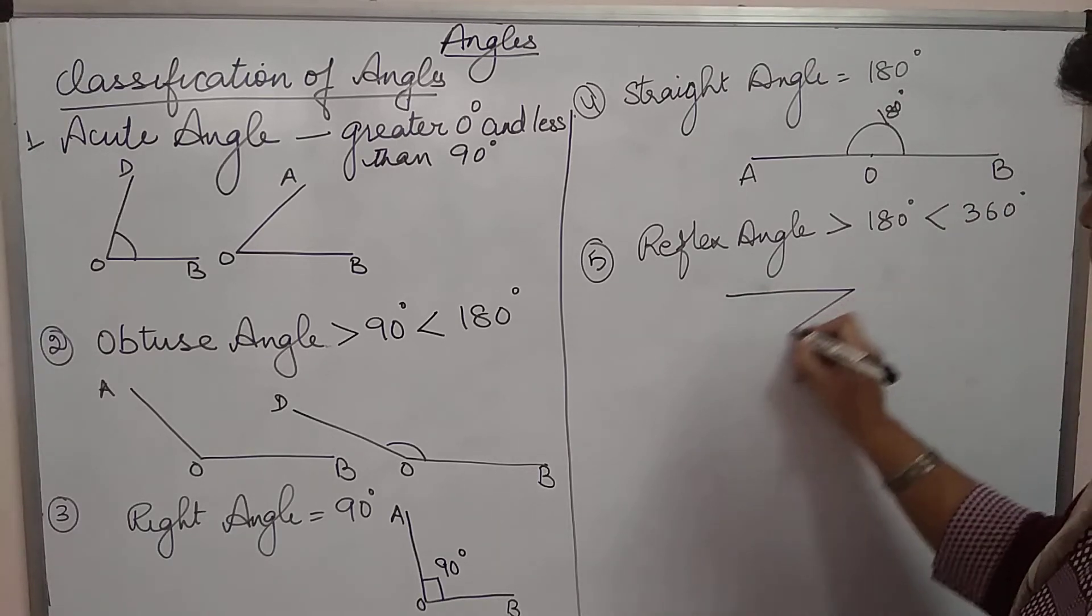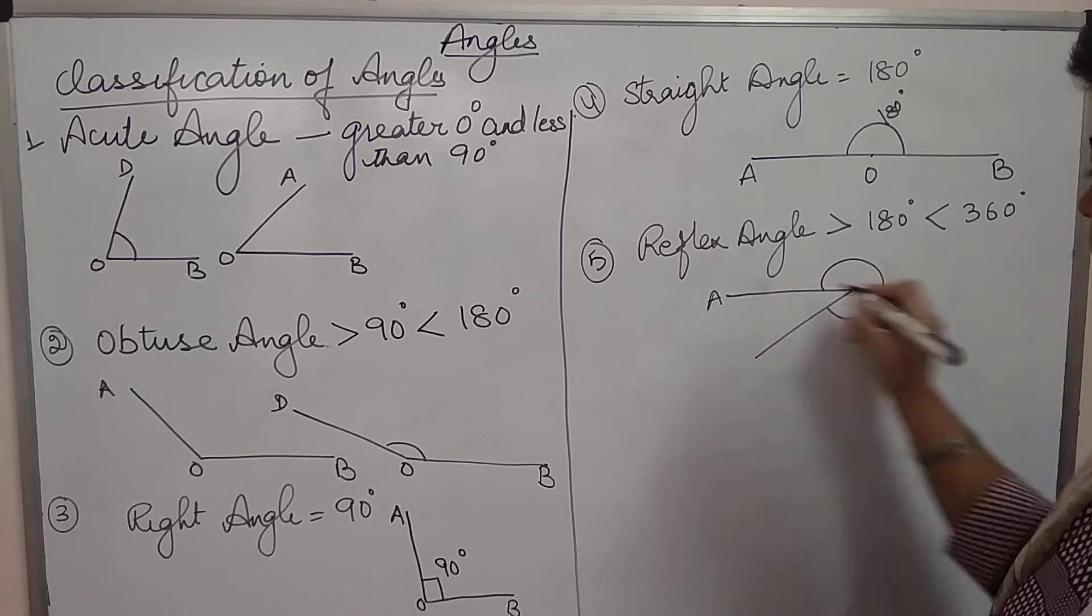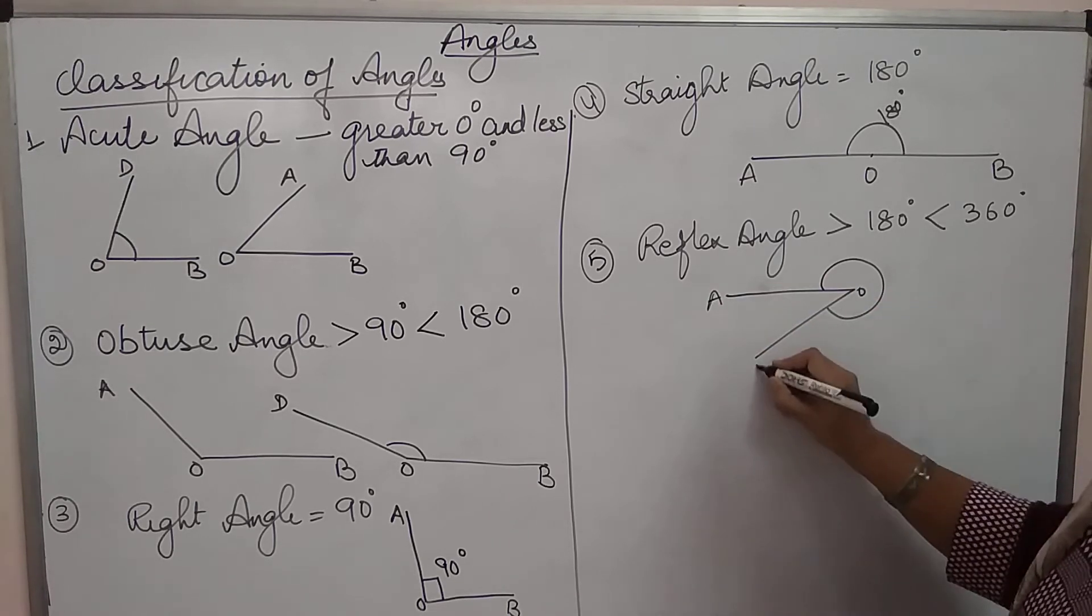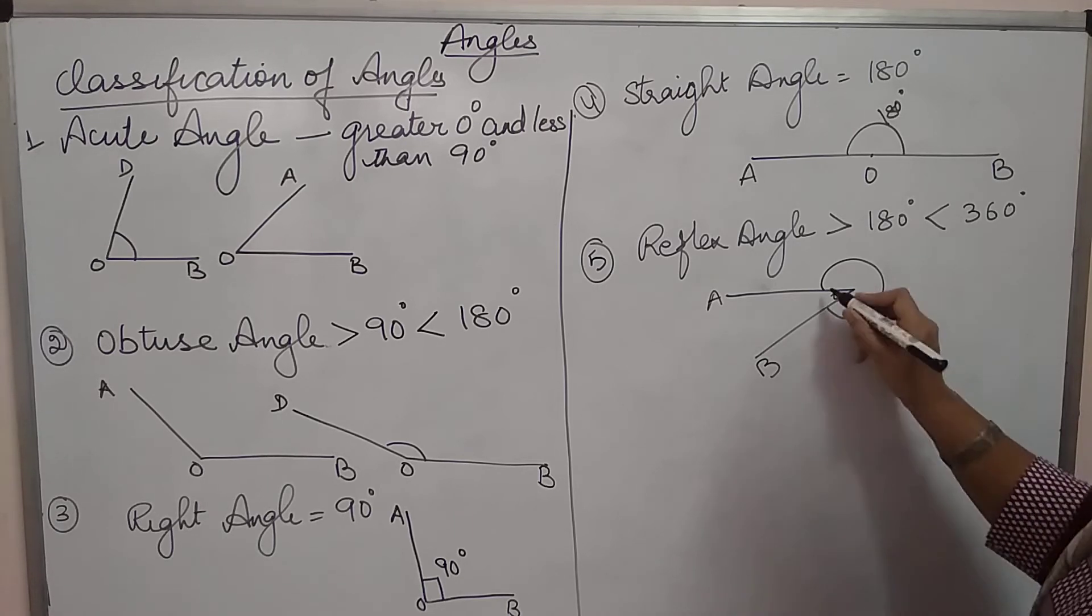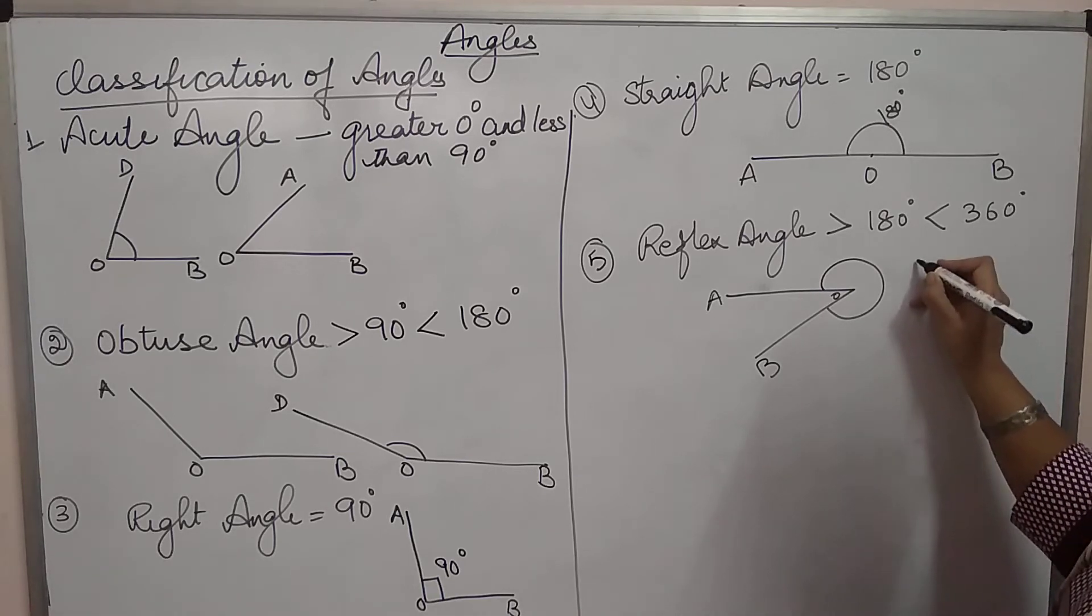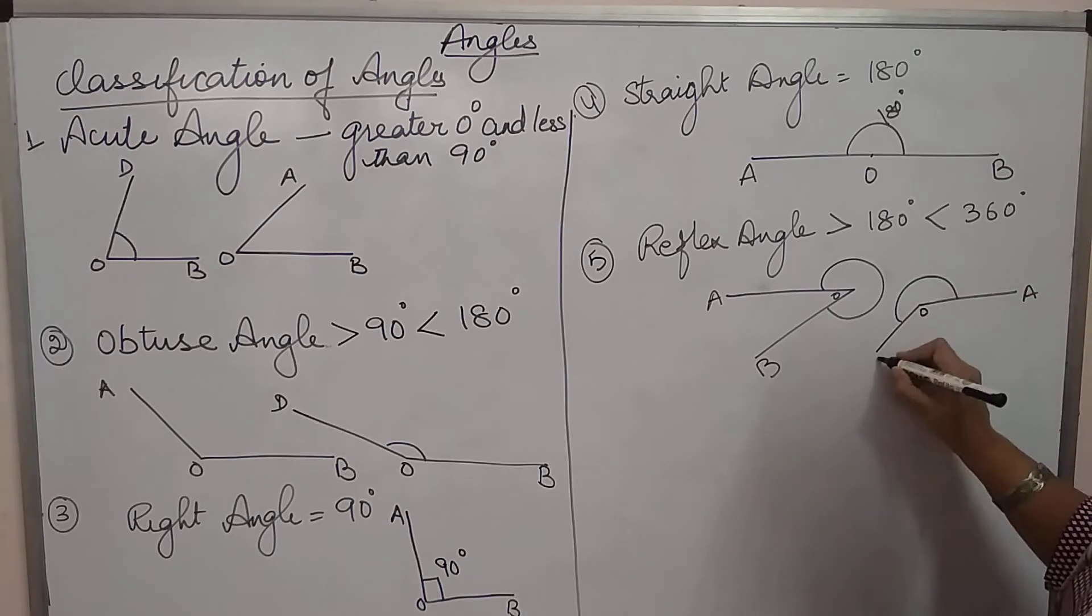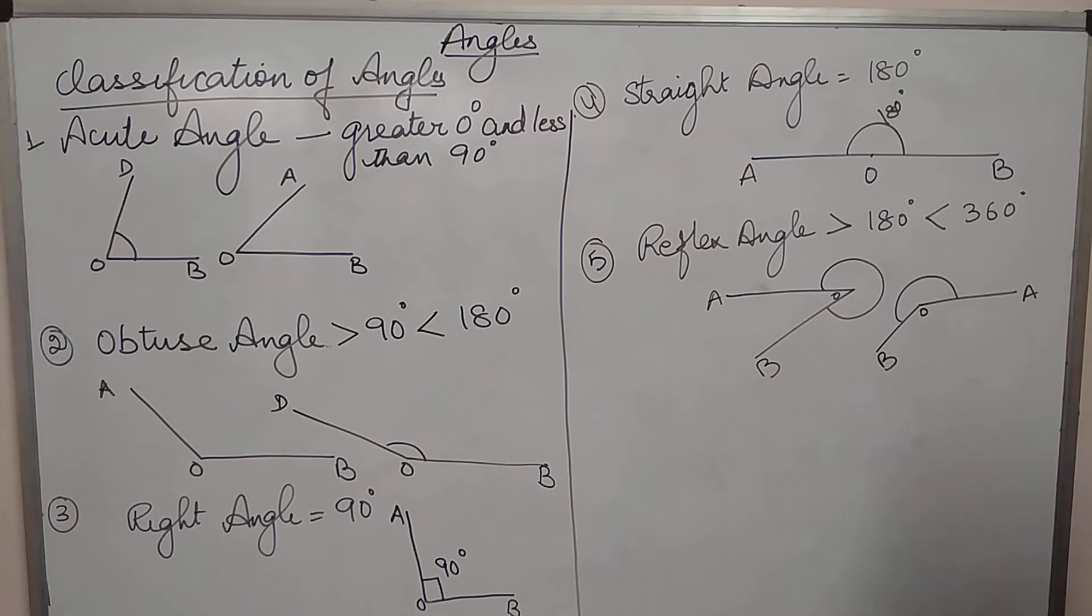So, another way to make it is make an acute angle and this side we are referring to angle AOB. Let's put this out. AOB is equal to reflex angle or we can even make it like this. Angle AOB is equal to reflex angle.